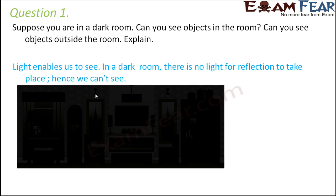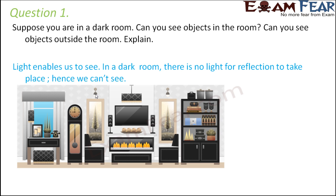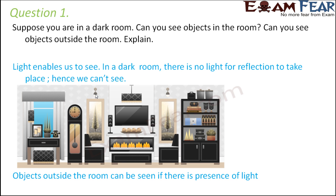So obviously inside the dark room we cannot see the objects. We will be able to see the objects outside the room only if there is presence of light. If outside the room it is also all dark, then we are not going to see anything there either.